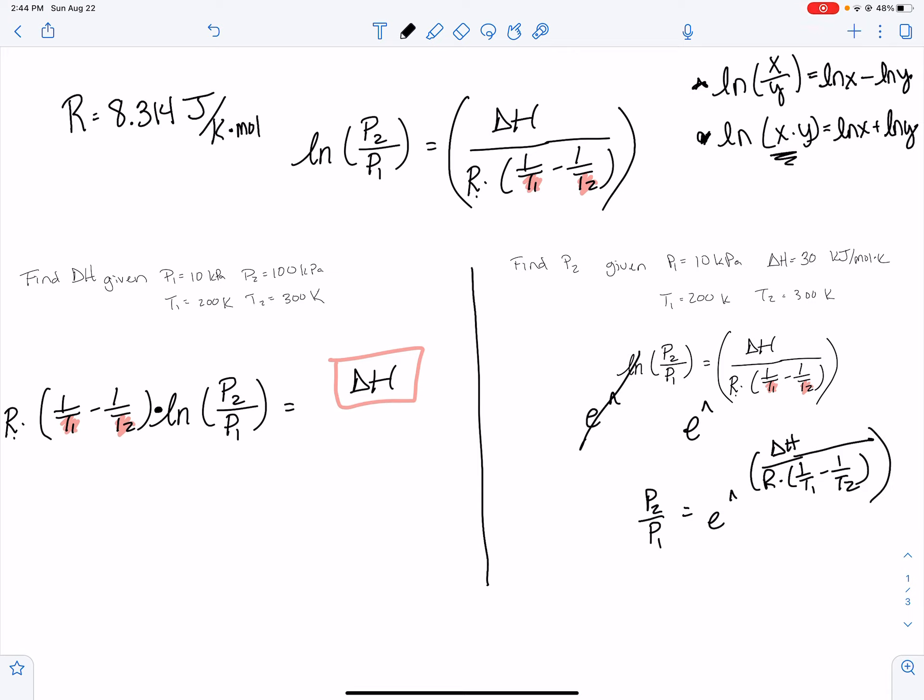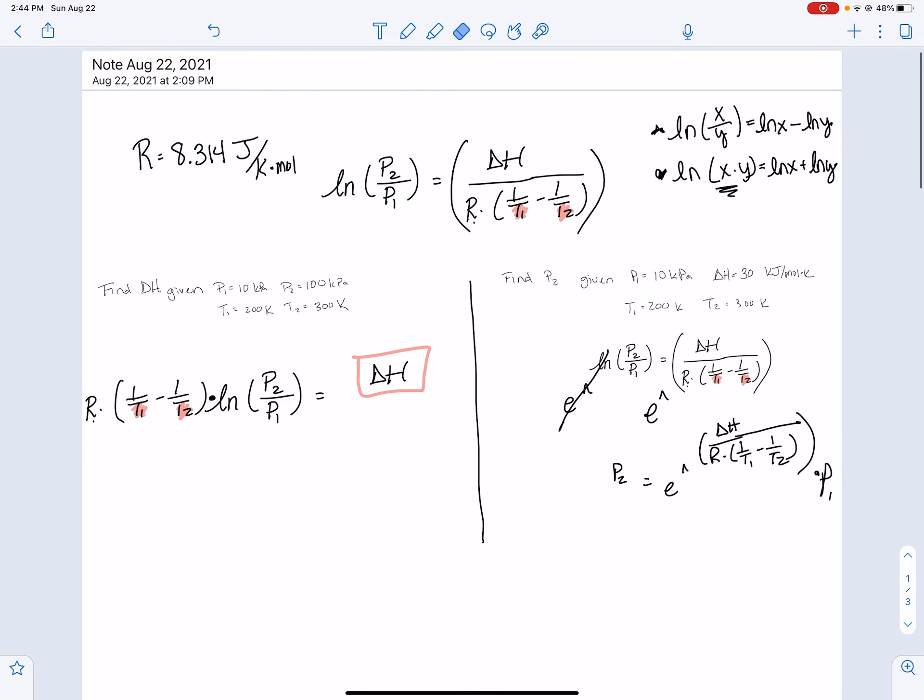And then if I need to solve for P2, then I'm also going to multiply both sides by P1. So this whole term is multiplied by P1.